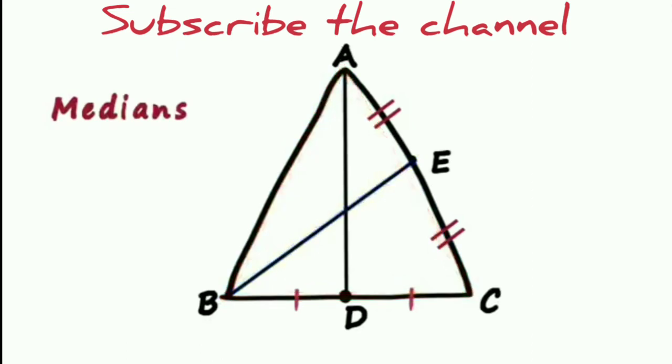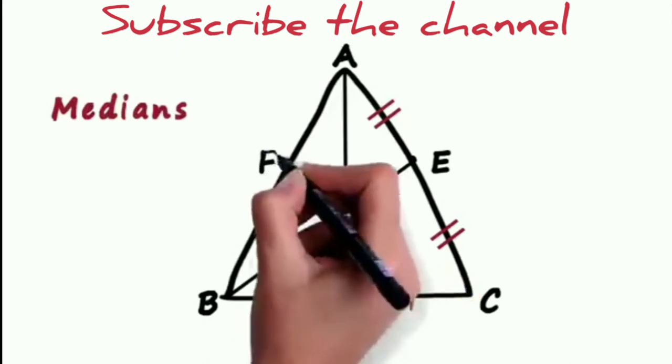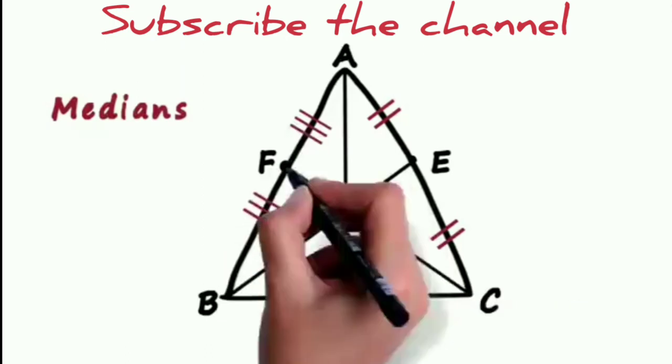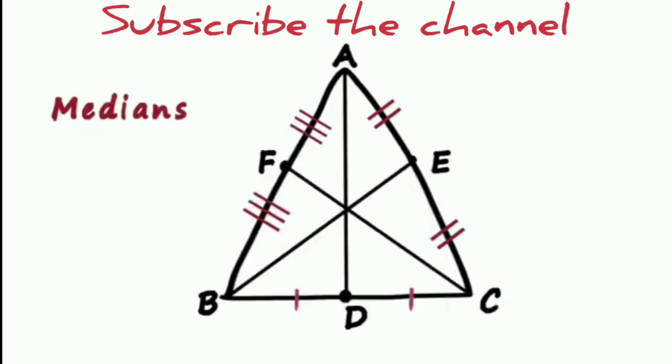Now we have to see the median from point C. The median from point C passes through F, the midpoint of segment AB. So segment CF is a median of triangle, and we can see that it passes through this point.